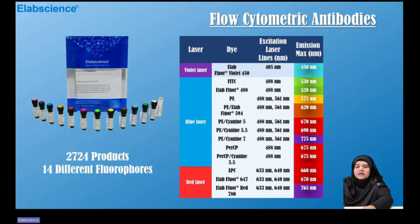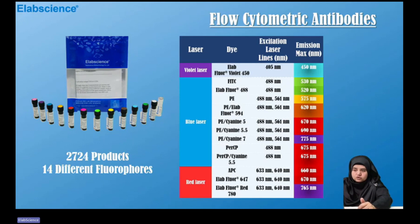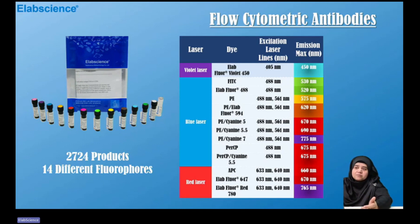E-Lab Science flow cytometry antibodies are optimized with labeling technology and have multiple fluorochrome dyes with a wide range of target markers. We offer 14 different fluorophores with more than 2,500 products. You can quickly find the products you need by searching according to target markers, reaction species, and conjugates.